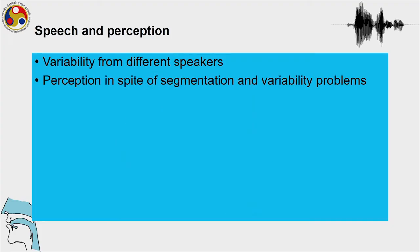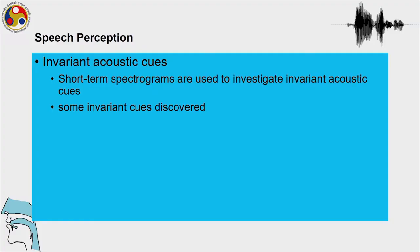Those are also factors affecting variability of sound. Despite segmentation and variability problems, human beings perceive speech quite well — there are many variables in the speech of any individual, yet listeners are able to understand whatever is conveyed by the speaker. In acoustic research, there has been research on invariant acoustic cues, and short-term spectrograms are used to investigate these invariant acoustic cues. Some invariant cues have actually been discovered for speech.